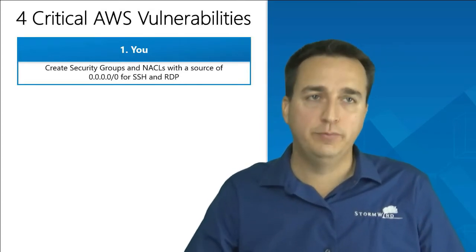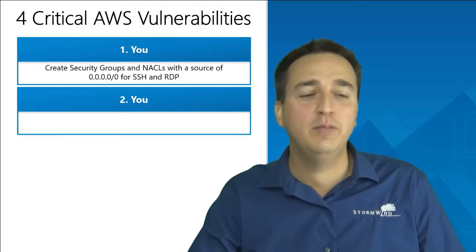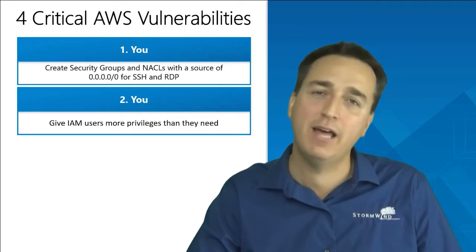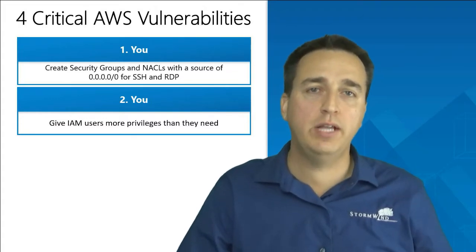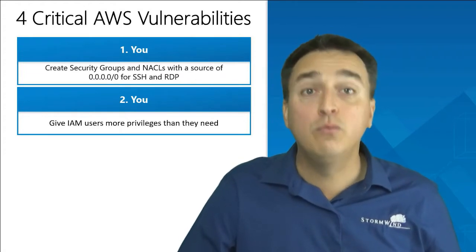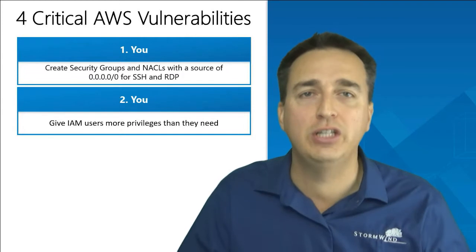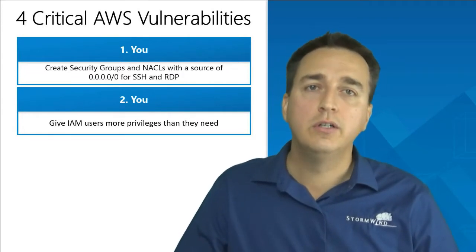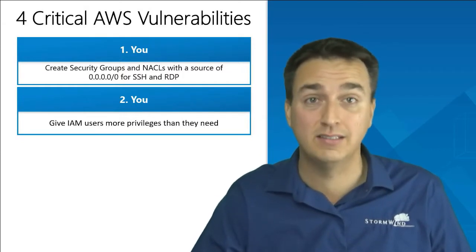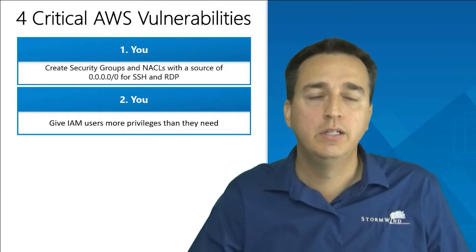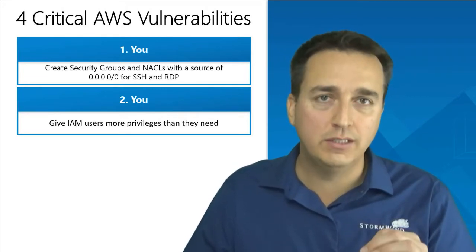Number two is also you. You give IAM users way more privileges than they need. You're not doing that on purpose, but it happens because we don't take the extra time to enforce the least privilege principle — only give IAM users the privileges they need to do their jobs. If a user is responsible for EC2 instances and doesn't need access to S3 buckets, don't give them access to S3 buckets. Only give them access to EC2.